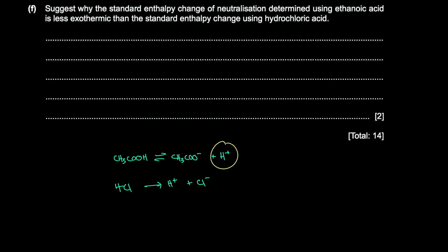Since ethanoic acid is a weak acid, more energy is needed for it to ionize completely. Because more energy is being taken in for the dissociation, the net enthalpy change is less exothermic — the net energy released is lower.